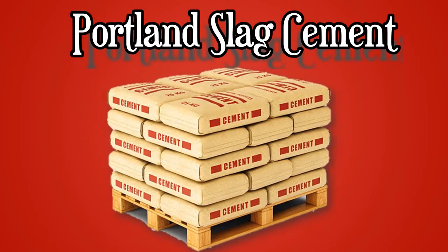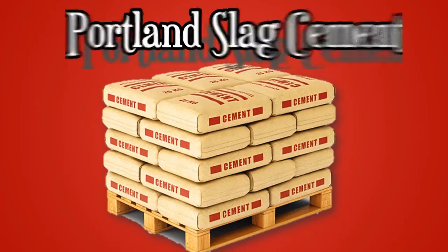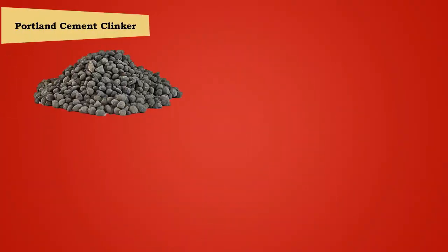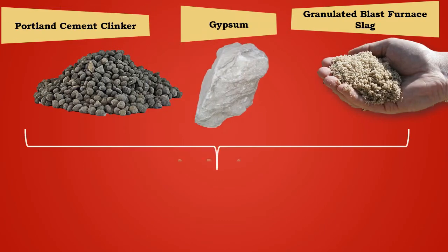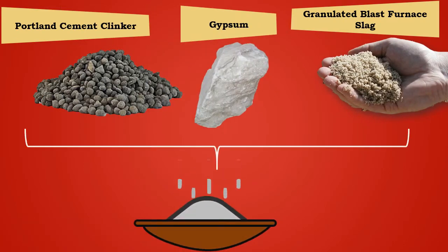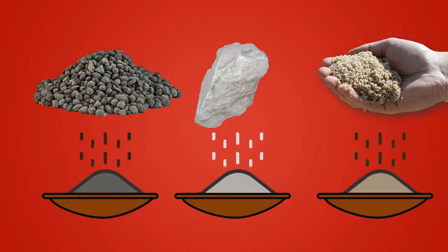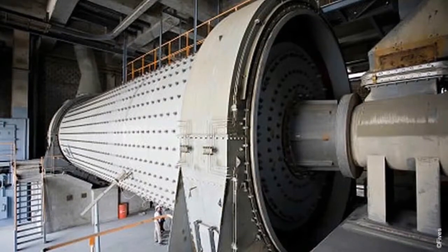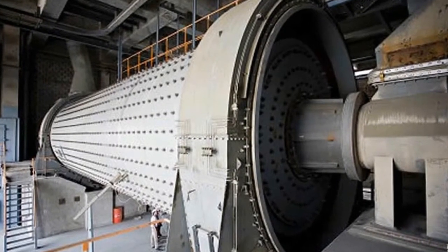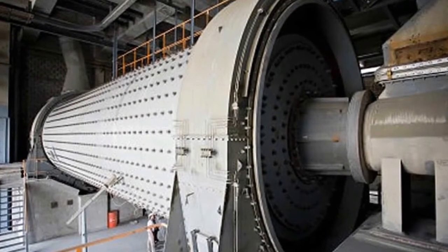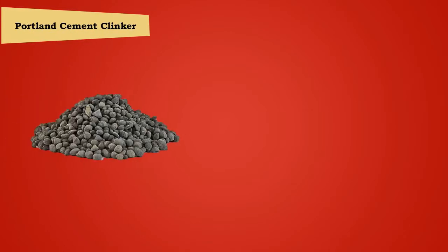Portland Slag Cement is obtained by mixing Portland cement clinker, granulated blast furnace slag with gypsum in a suitable proportion and grinding it to a finer particle. It can also be manufactured by uniform blending of Portland cement and finely ground granulated slag and mixing it thoroughly.